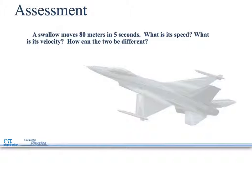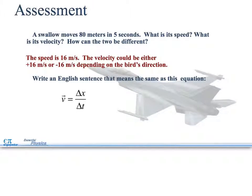Back to our assessments. The swallow moves 80 meters in 5 seconds. What is its speed? What is its velocity? How can the two be different? The speed is 16 meters per second because we said v equals distance divided by time, which was going to be 80 divided by 5, which gave me the 16 meters per second.